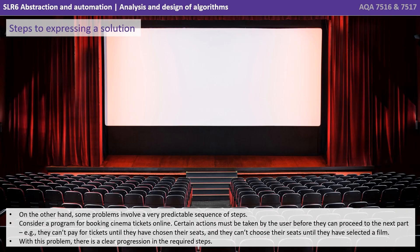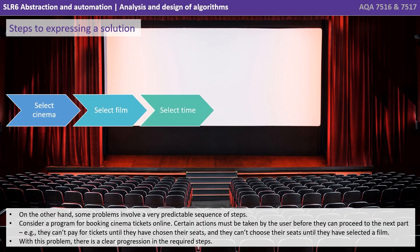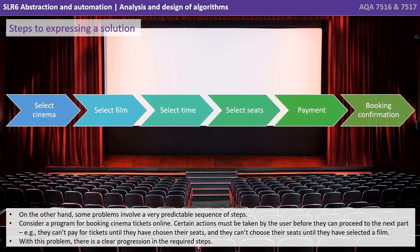On the other hand, there are some problems that involve a very predictable sequence of steps. Consider a program for booking cinema tickets online. Certain actions must be taken by the user before they can proceed to the next step. They can't pay for the tickets until they've chosen their seats, and they can't choose their seats until they've selected a film. With this problem there is a clear progression in the required steps.